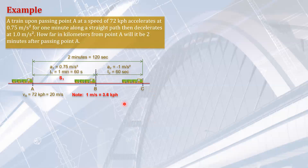This is a motion problem involving uniform acceleration. You have to identify the problem correctly. The three basic formulas for uniform acceleration are: final velocity V equals initial velocity V₀ plus acceleration a times time t; distance S equals V₀t plus one-half at²; and V² equals V₀² plus 2aS.